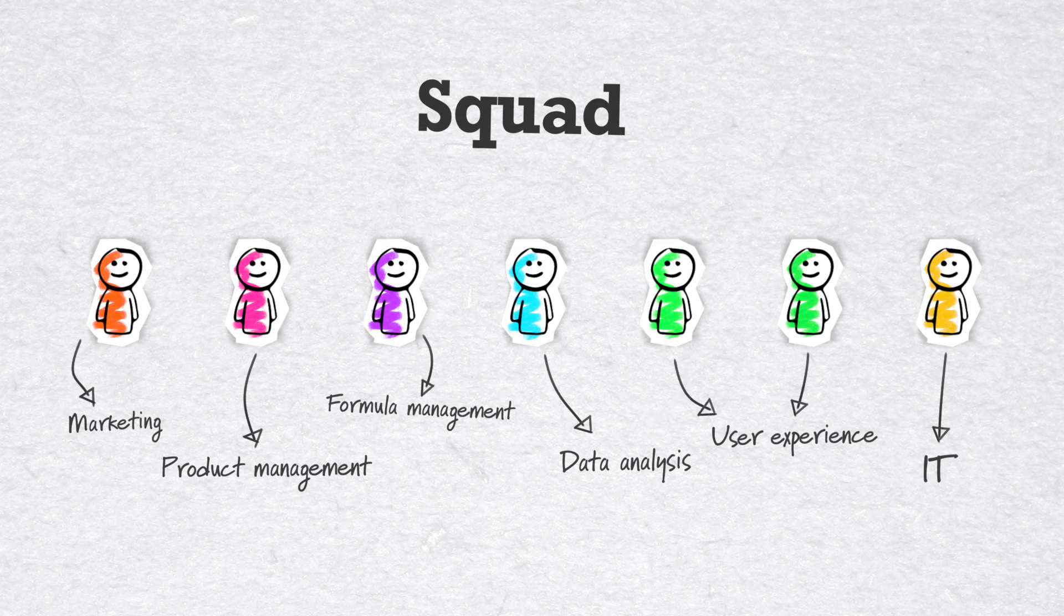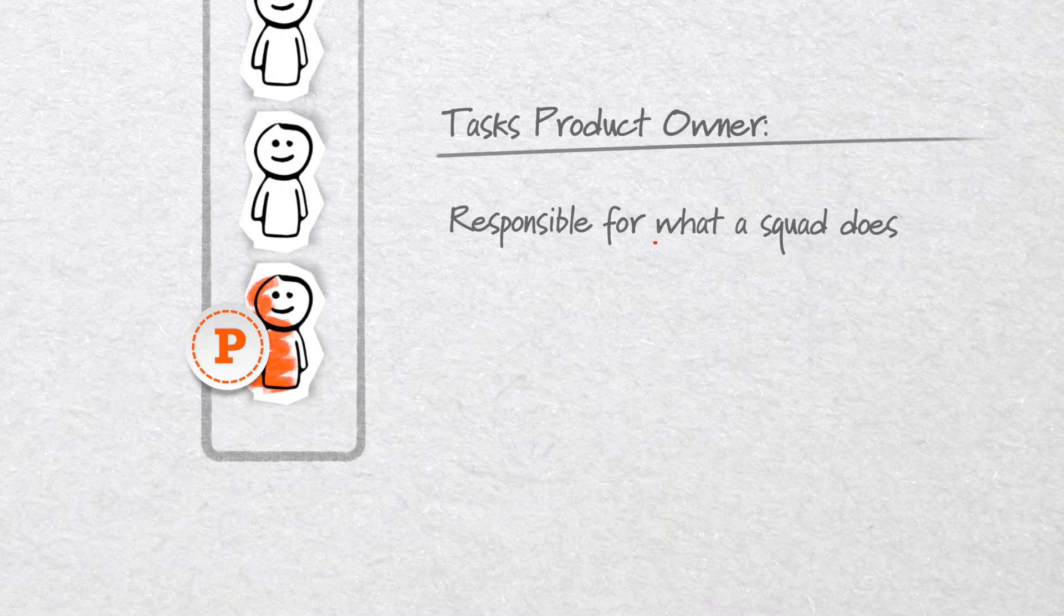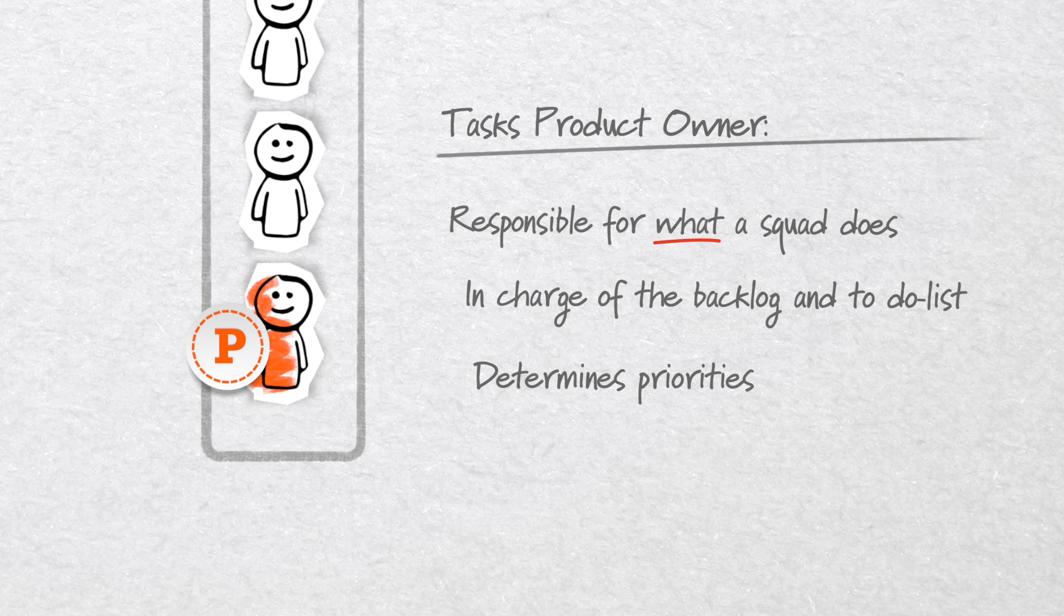Within each squad, product ownership is assigned to one squad member. This product owner is responsible for what a squad does, is in charge of the backlog and to-do list, and determines priorities. This does not mean the product owner is the boss.